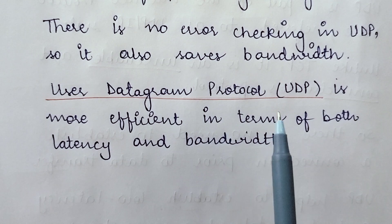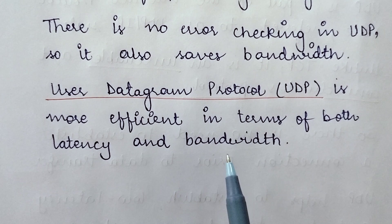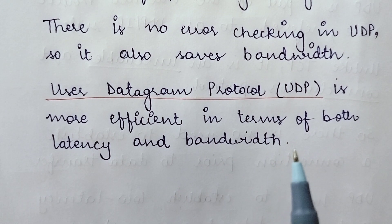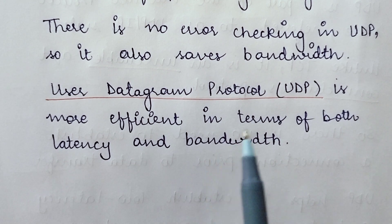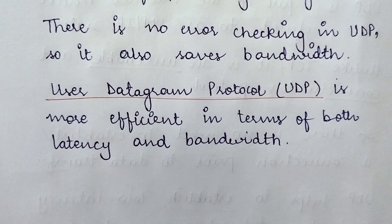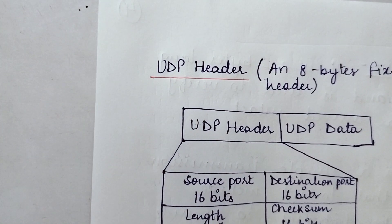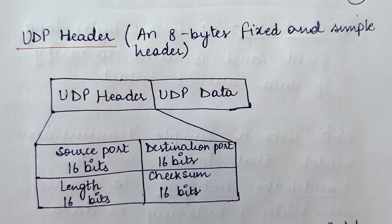The User Datagram Protocol is more efficient in terms of both latency and bandwidth. It saves bandwidth and time because it does not get into the overhead of sending acknowledgements or checking errors. Definitely it saves a lot of time and bandwidth, so it is efficient in terms of both latency and bandwidth.